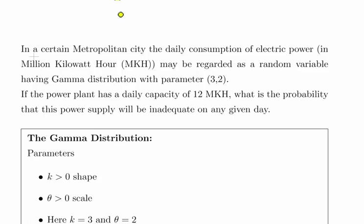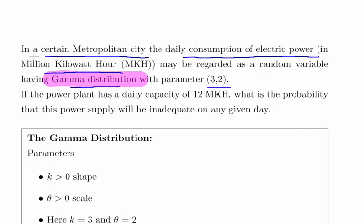Ok, this presentation will relate to the gamma distribution. In this question we're told that there's a certain metropolitan city where the daily consumption of electric power in terms of million kilowatt hours may be regarded as a random variable having a gamma distribution with parameters 3 and 2.